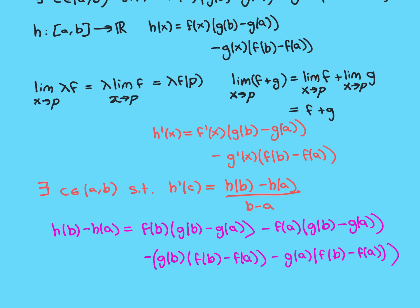Before doing h'(c), let's first study h(b) minus h(a). I've written this out in a way that will save us some time. All I'm doing is going to the definition of h, plugging in x = b and x = a, and subtracting. This bit here is h evaluated at b: we get f(b) times g(b) minus g(a), and then minus g(b) times f(b) minus f(a). That is just h(b).